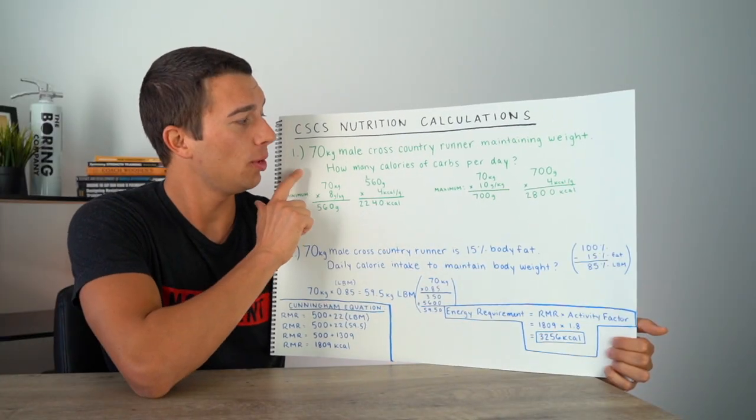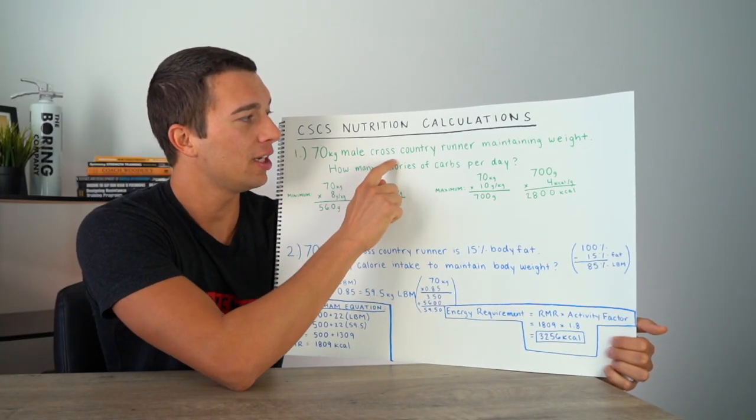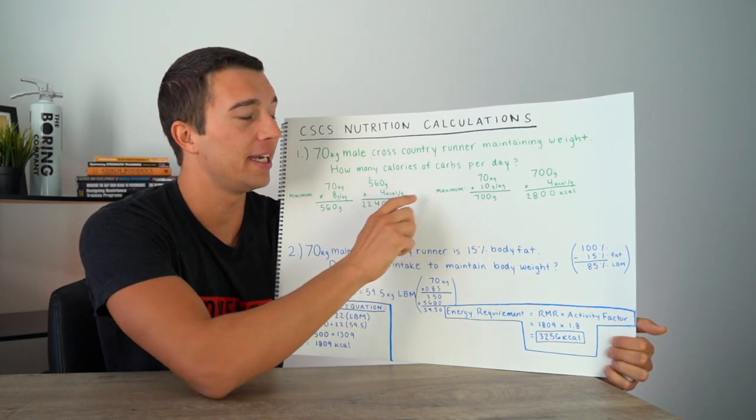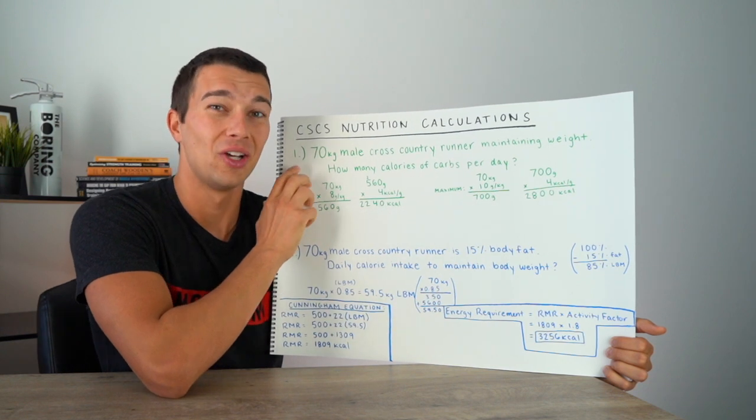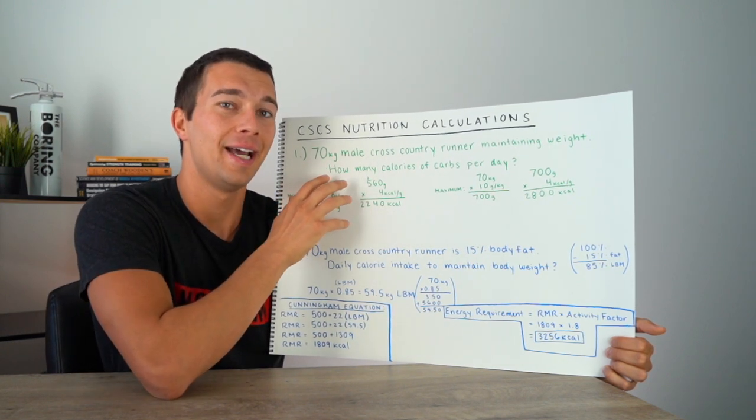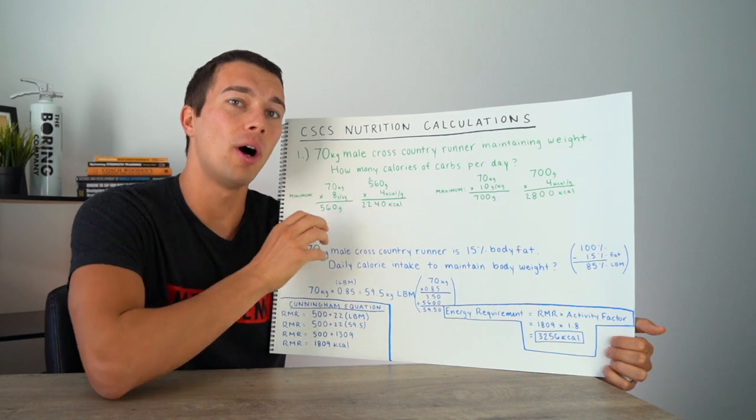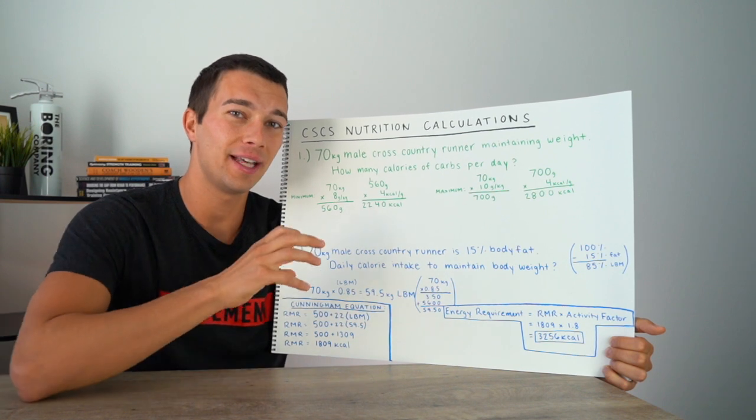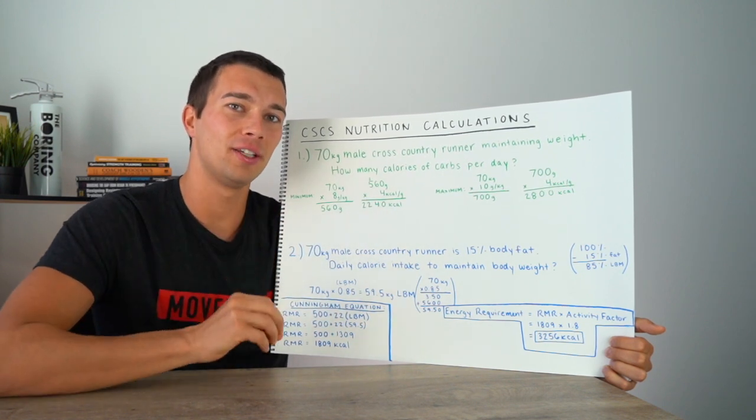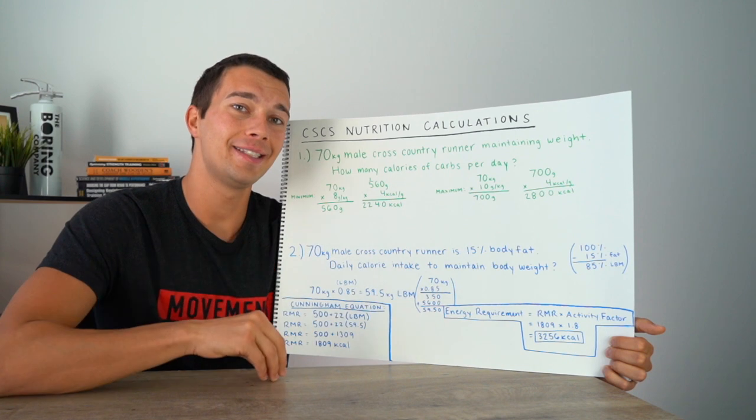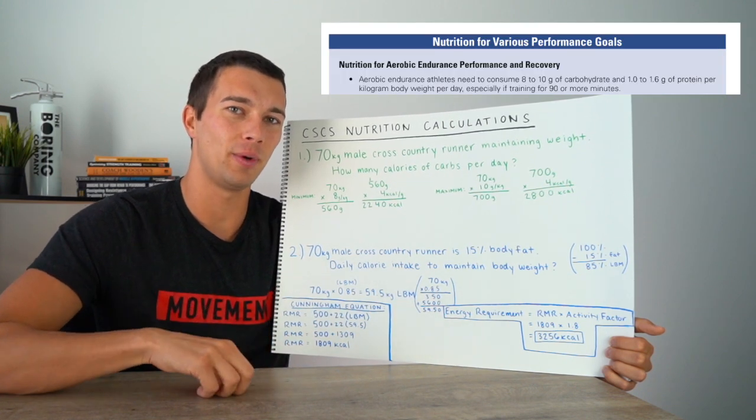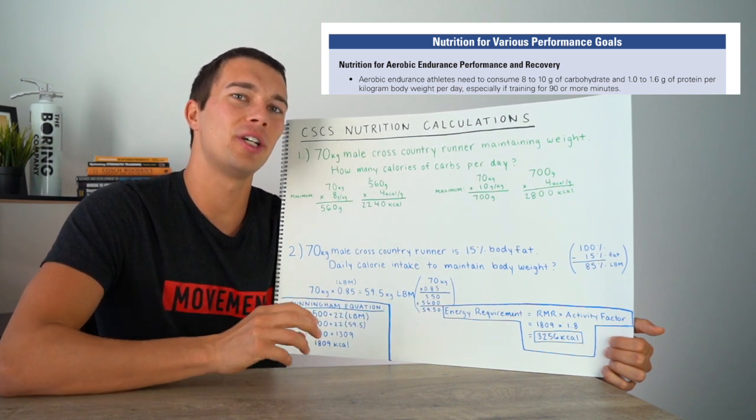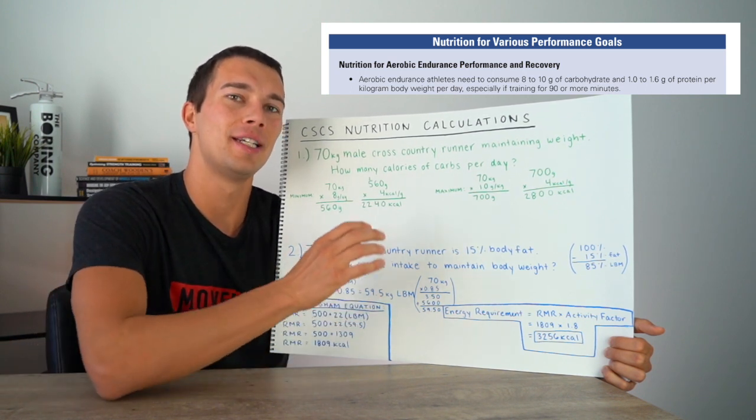So let's start off here with question number one about a 70 kilogram male cross-country runner maintaining his weight. How many calories of carbs per day does he need to eat? So there's some information that we need to answer this question, and the first thing we need to know is, what are the carb recommendations for an endurance athlete? This endurance athlete is maintaining his weight, so he's gonna use the carbohydrate recommendations of eight to 10 grams per kilogram body weight per day. So you can get that right off of page 215 in the textbook, and then we're gonna use that eight to 10 range to make this calculation.